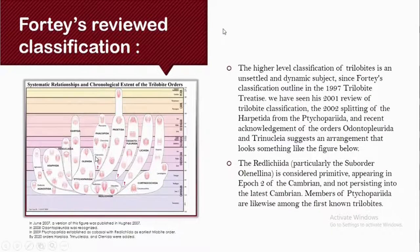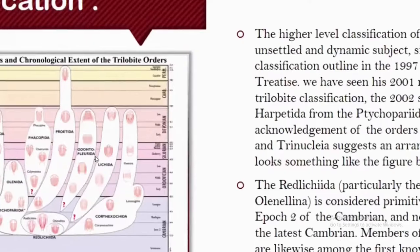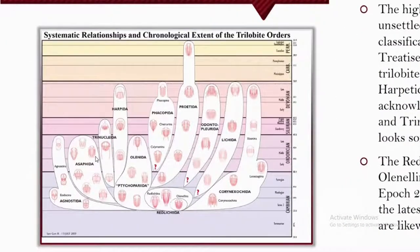Fortey's Revised Classification is a higher-level classification for trilobites, which was revised many times in 2001 and 2002, where from the Tichoperiida order, the Harpetida order came out. And in recent times, the Odontopleurida and Trinucleida suggest an arrangement that looks something like this. This is the branch and the classification for Fortey's Revised.